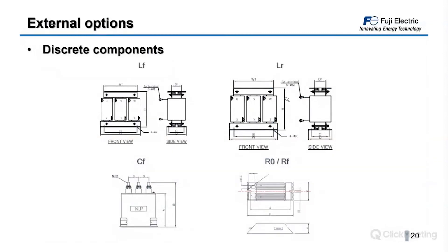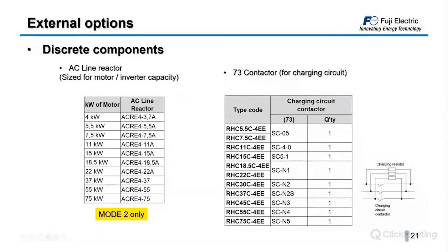The components look as expected: inductances look like inductances, and capacitors are mounted in a box. For Mode 2, a line reactor is used — sized according to motor or inverter power, using standard AC reactors from Fuji Electric. The charging circuit contactor references are provided by Fuji Electric, though standard contactors from any supplier can be used since they have no special characteristics.